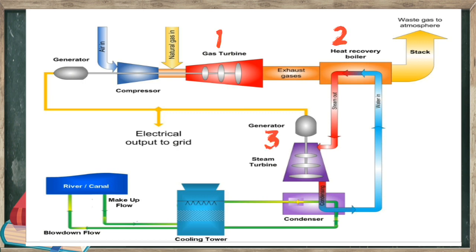Here you can see that there are three steps in combined cycle power plant. First one is gas turbine burns fuel. The fast spinning turbine drives a generator that converts a portion of the spinning energy into electricity.